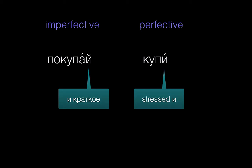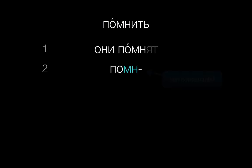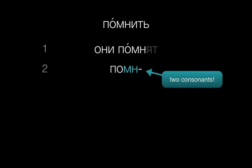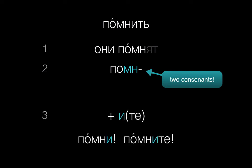There is one kind of exception that you may see occasionally. A verb like помнить has not just a consonant at the end of the stem, but a cluster of two consonants. And when that happens, we don't need to check the stress of the Я form — we'll just add И: помни, помните.